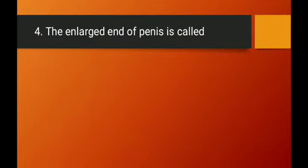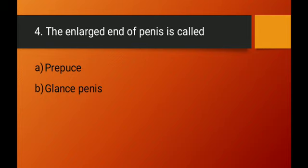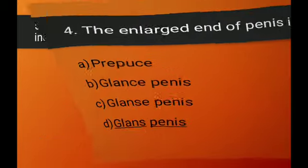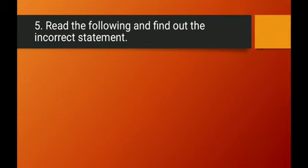Question number four: the enlarged end of the penis is called what? Option A says 'prepuce,' which is wrong — prepuce is the foreskin. Options B, C, and D all say 'glans penis,' but spelling differences exist. Prepuce is the foreskin, while the enlarged/swollen end of the penis is correctly called the glans penis. The spelling of each term is very important in biology. Option D is the right answer.